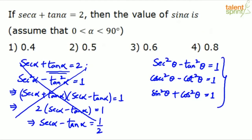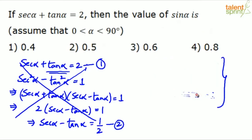Now we have two equations — equation 1: sec α + tan α = 2, and equation 2: sec α - tan α = 1/2. Solve these two equations to find sec α and tan α. Once you know sec α, you can find sin α because sin α = tan α / sec α, using trigonometric ratios and identities.